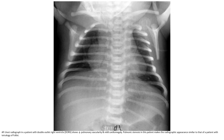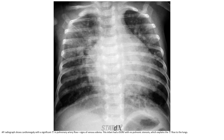A radiograph of a patient with double outlet right ventricle shows decreased pulmonary vascularity and mild cardiomegaly. These features make the radiograph appear similar to that of a patient with tetralogy of Fallot. Another radiograph shows cardiomegaly with a significant increase in pulmonary vascular flow, plus signs of venous engorgement. This patient had double outlet right ventricle with no pulmonary stenosis, which explains the increased flow to the lungs.